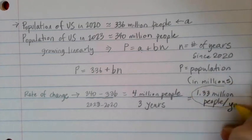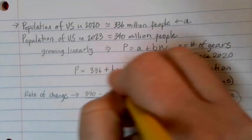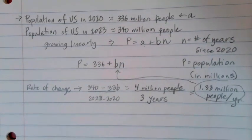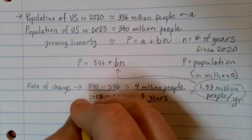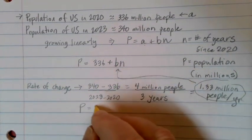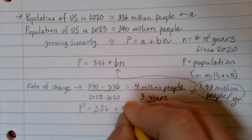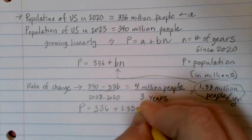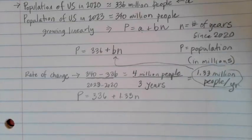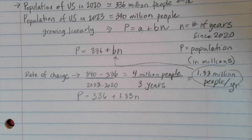Once you've calculated your rate of change, remember that's the B value. And we can finish writing our general equation. So here, P is going to be equal to 336 plus 1.33 times N. And once you have information like this, we can answer all sorts of questions.